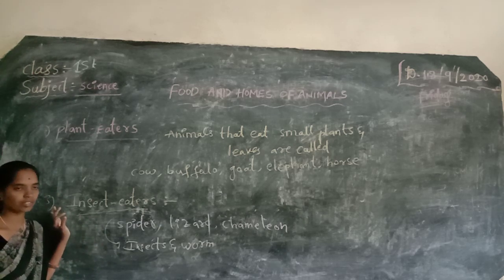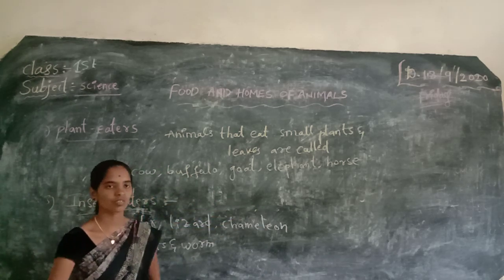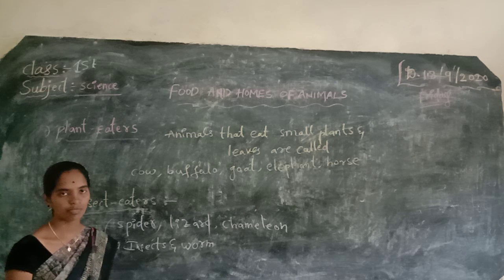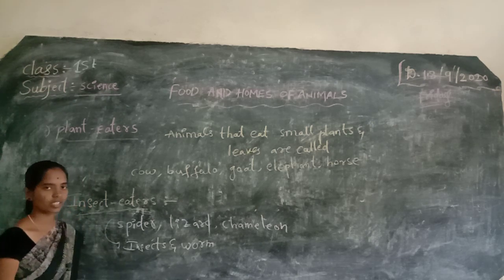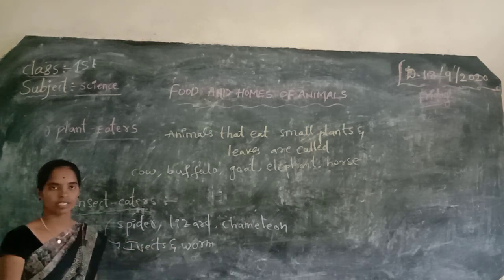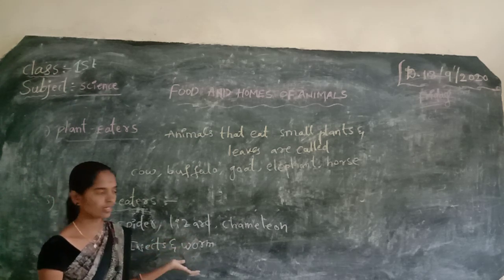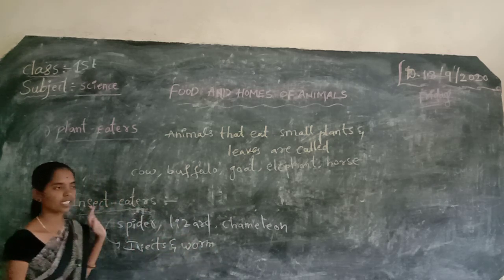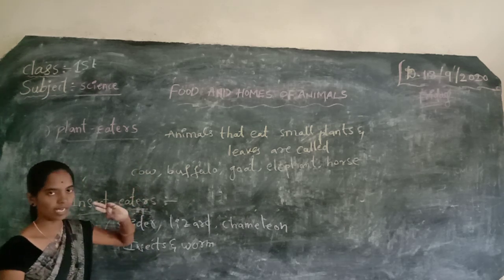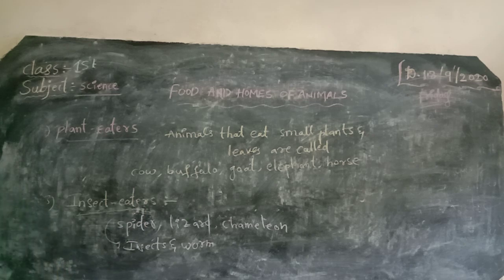Plant eaters eat plants only — for example, cow, buffalo, goat, sheep, horse, elephant. Grain eaters eat grains only — for example, squirrel, mouse, hen, pigeon. Insect eaters eat insects and worms — for example, lizard, spider, chameleon. Up to now we discussed about three types of animals: plant eaters, grain eaters, and insect eaters. Thank you.